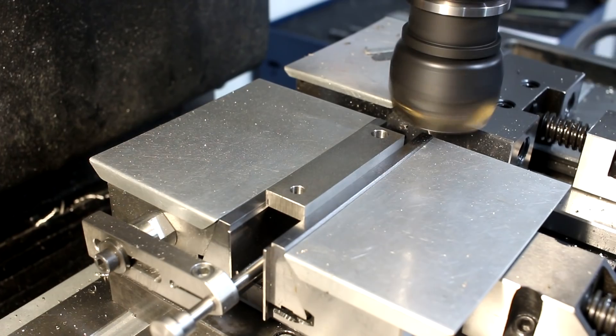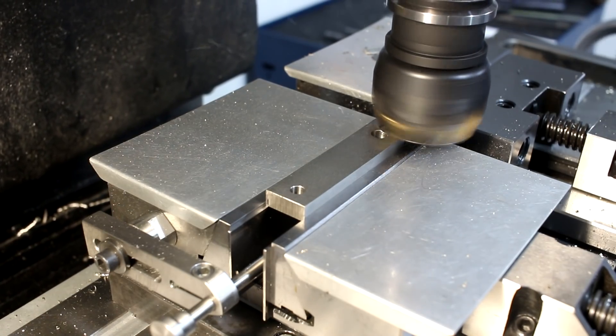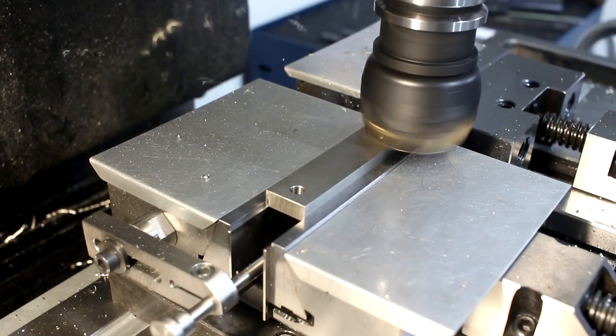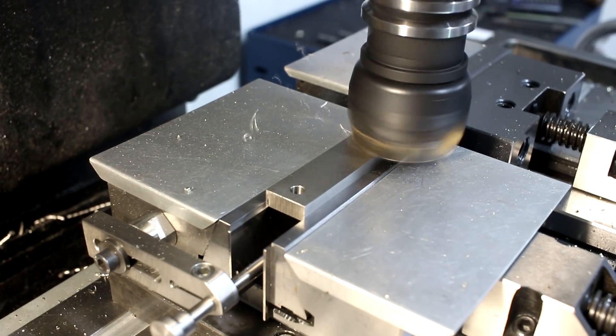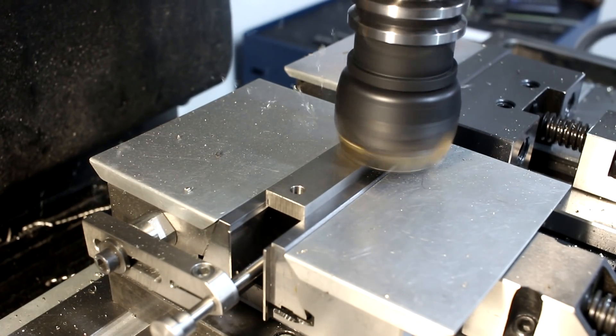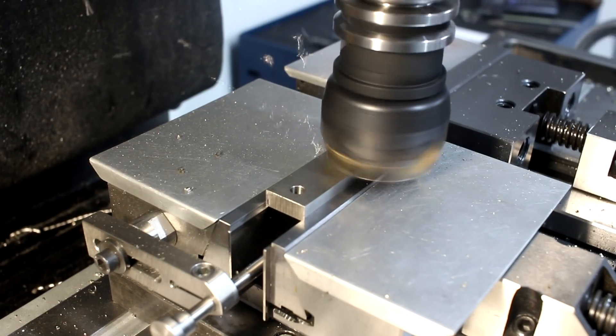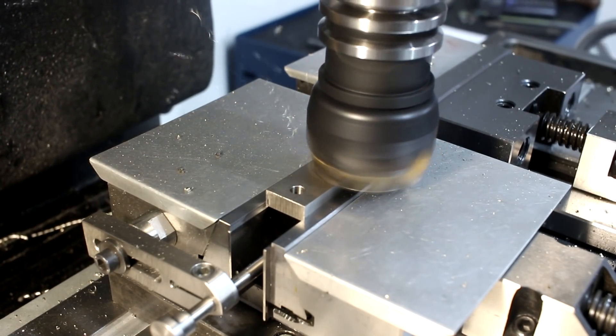The stock I had on hand is 10mm thick and I need a final thickness of 6.1mm. So I'm taking the 50mm face mill, running at 1000 RPM, and I take the stock to final thickness.